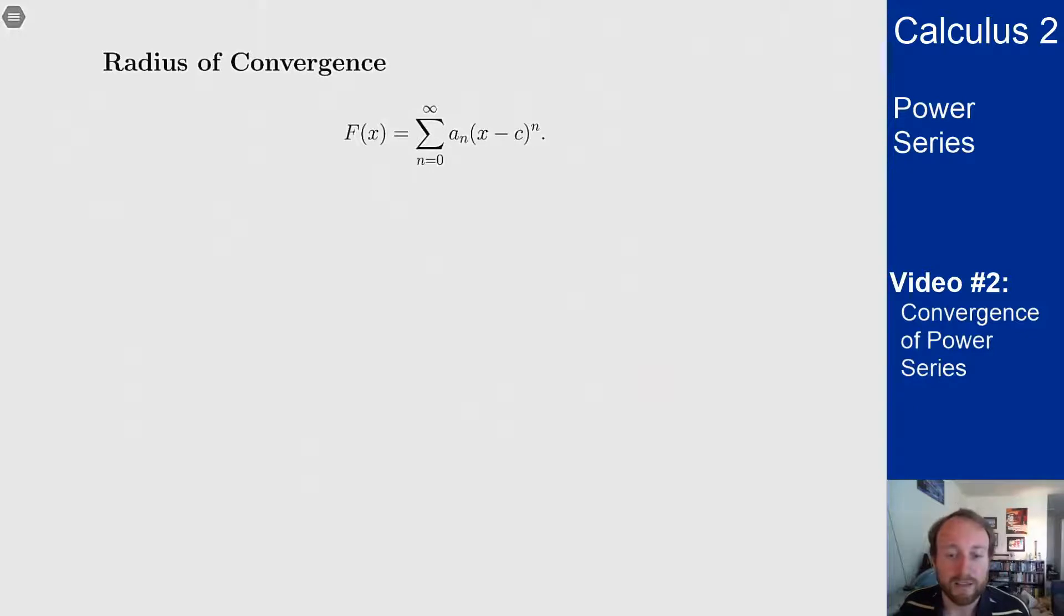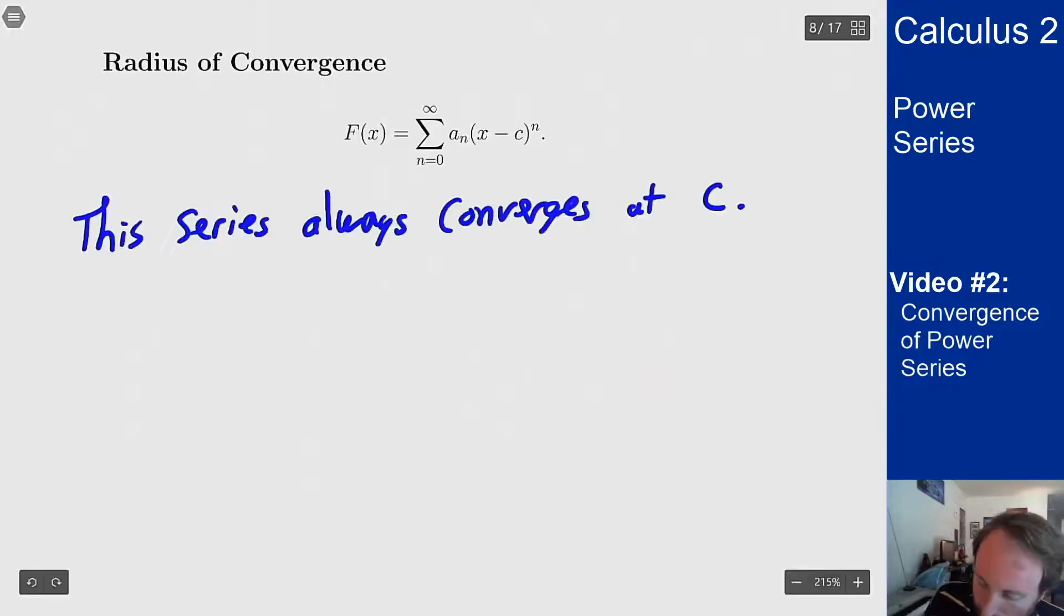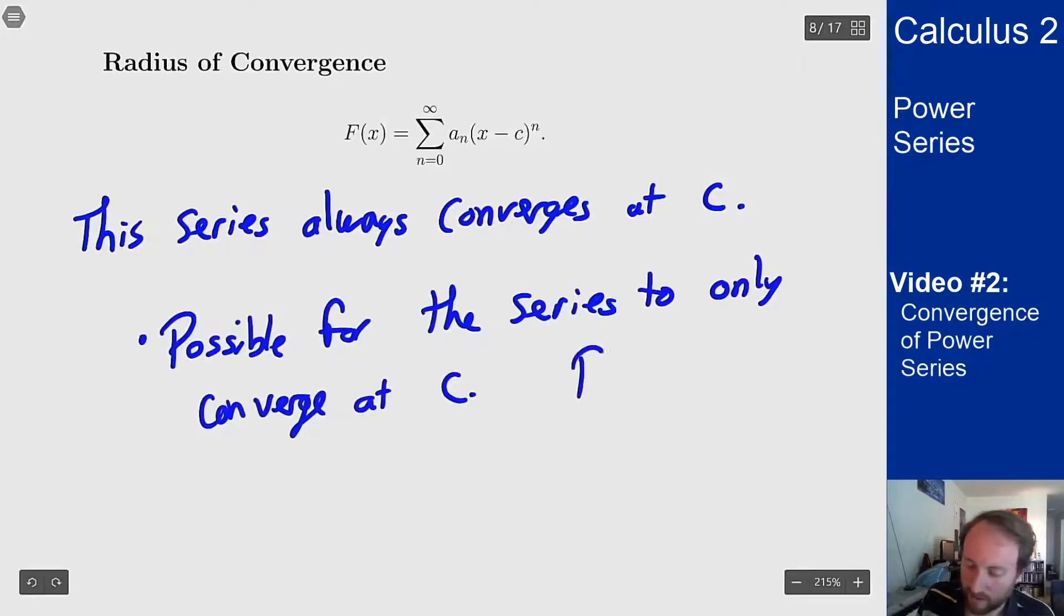Let's talk about this radius and this power series a bit more. This series always converges at c. Why is that? Well if I plug in c for x I just get zero to the n so that all goes away and I only will have the first term surviving. We always converge at c. It's possible for the series to converge only at c. In this case we set r to be zero and that's what we get from the interval.